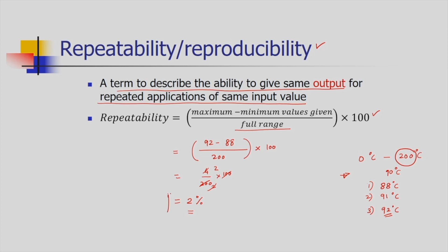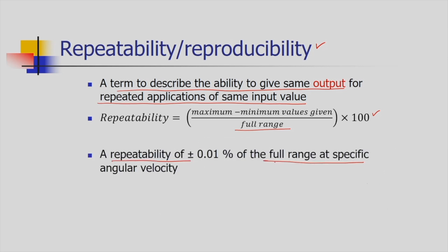For comparison, a repeatability of plus or minus 0.01% of full range at a specific angular velocity means the repeatability is very stringent — the system is very accurate.